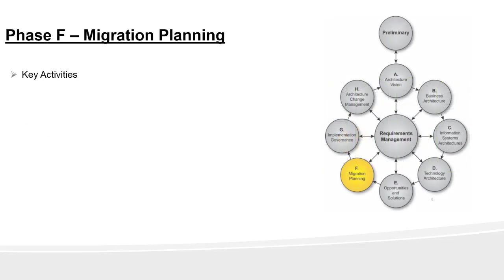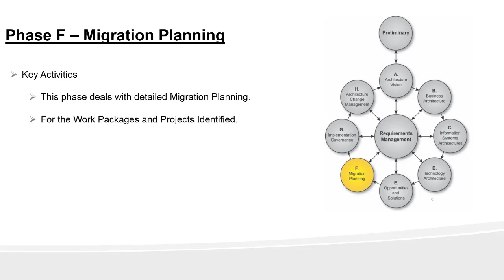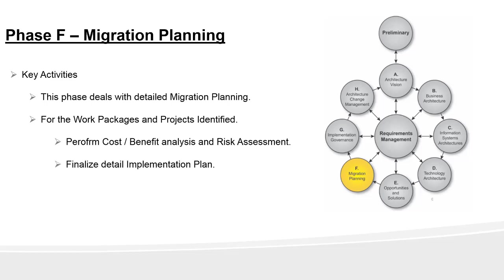Welcome to Phase F, the migration planning phase. Phase F addresses the detailed migration planning — that is, how to move from a baseline to the target architecture. Some of the key activities performed in this phase are: for the work packages and projects that are identified, perform a cost-benefit analysis and a risk assessment, and finalize a detailed implementation and migration plan.